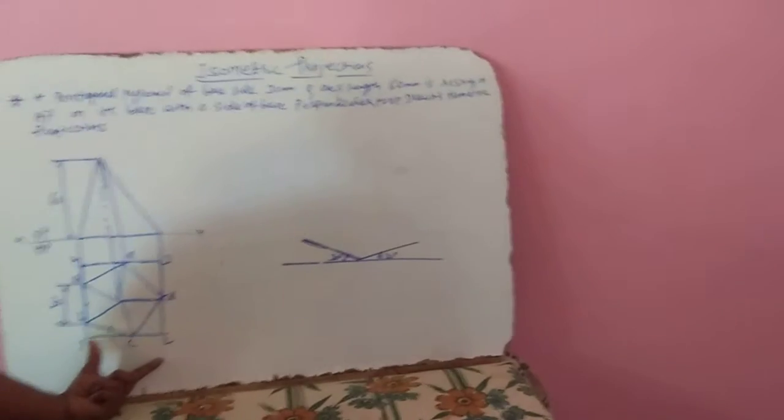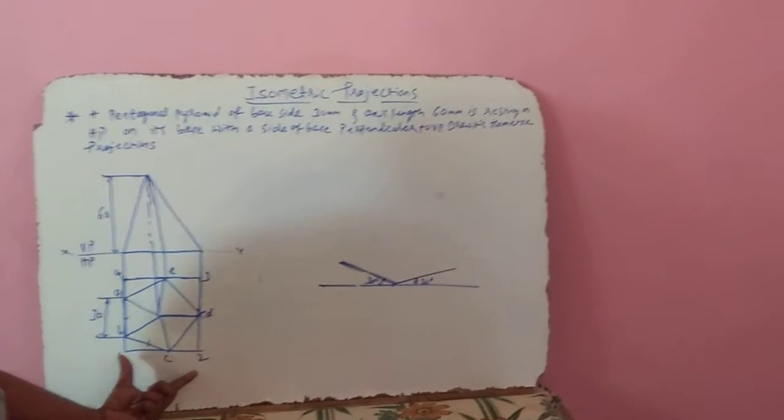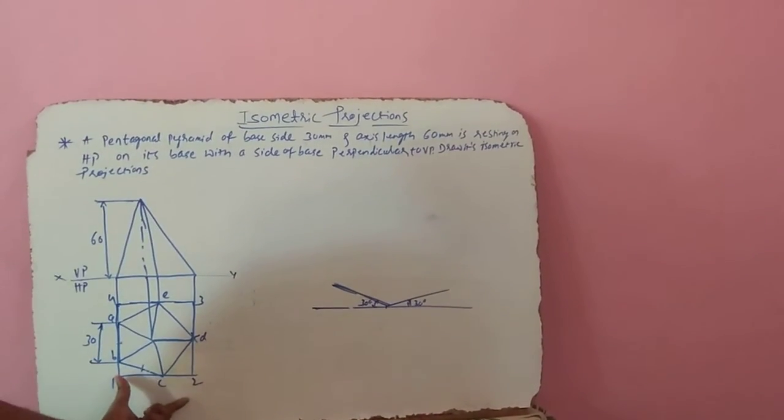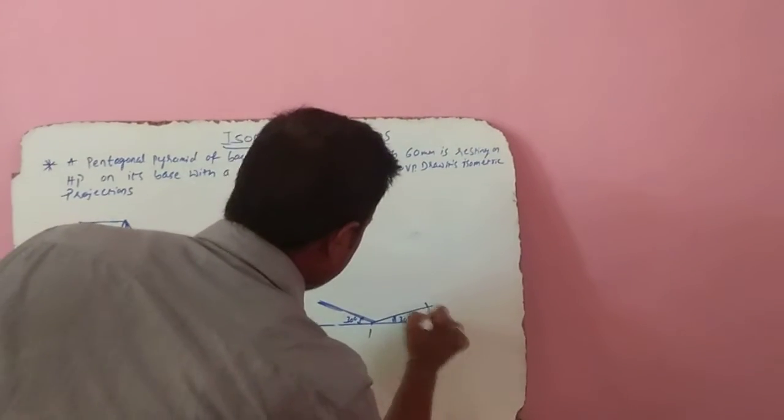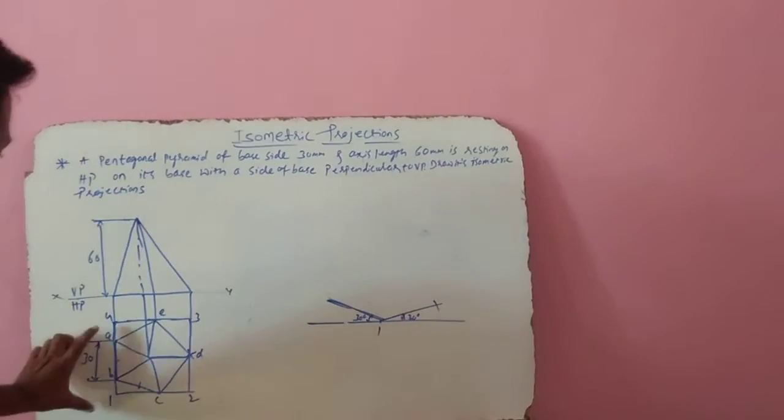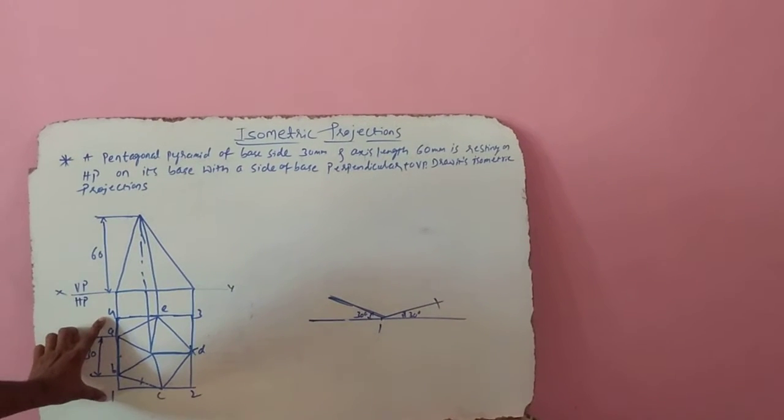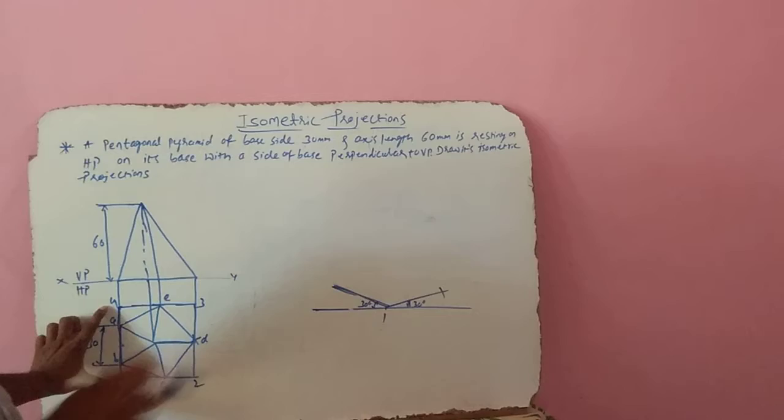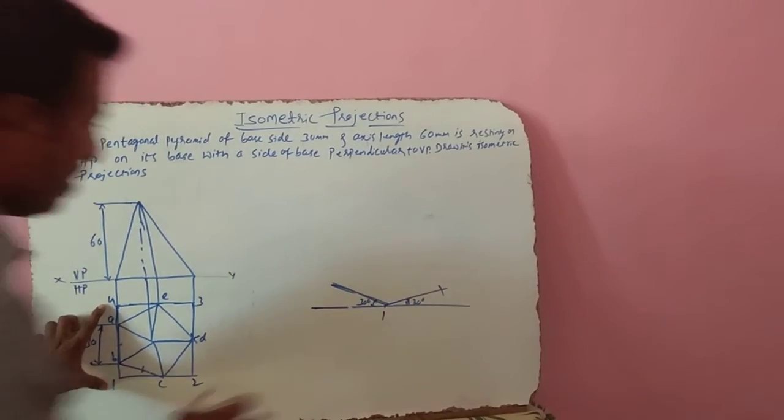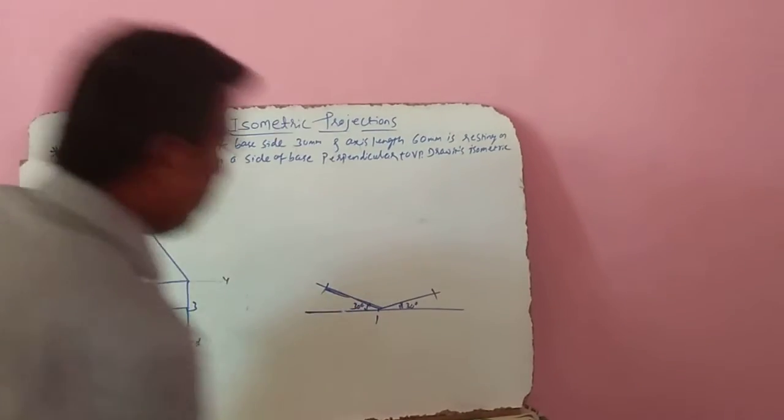We have to measure the length of 1 to 2, take isometric length of the length 1 to 2 and mark it here. Similarly, measure what is the length of 1 to 4, convert that to isometric length by just multiplying with the 0.816. You have to mark that.